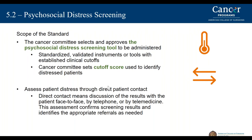The cancer committee must select and approve the psychosocial distress screening tool to be administered. This should be a standardized validated instrument or a tool with an established clinical cutoff. The cancer committee can set the cutoff score used to identify distressed patients. Patients must be assessed for distress through direct patient contact, meaning discussion of results with the patient face-to-face, by telephone, or by telemedicine. This assessment confirms screening results and identifies the appropriate referrals as needed.